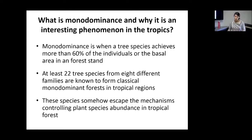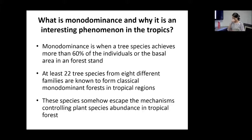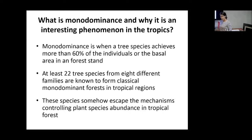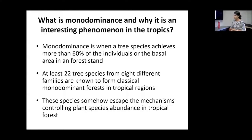What is monodominance, or tropical monodominance? Tropical monodominance is when one tree species accounts for 60% or more of the basal area or number of individuals in a forest. This is unusual in tropical forests because most tropical forests have very high diversity. At least 20 to 30 species have been reported as tropical monodominants, and these species somehow escape the mechanisms that control plant species abundance in tropical forests.